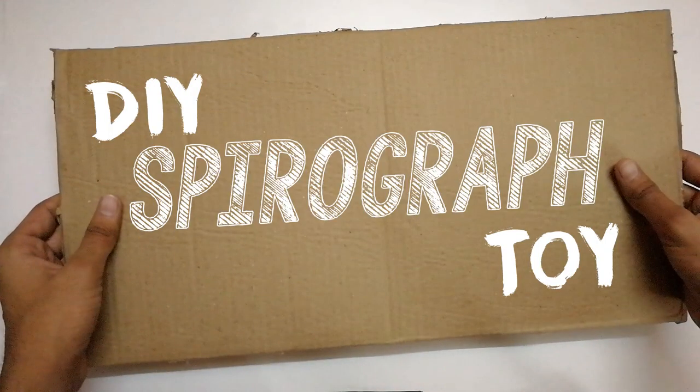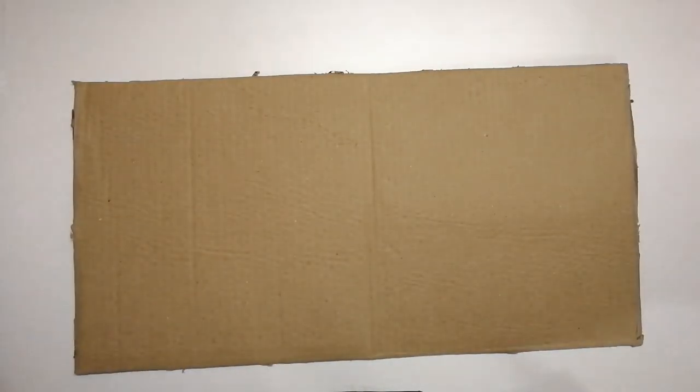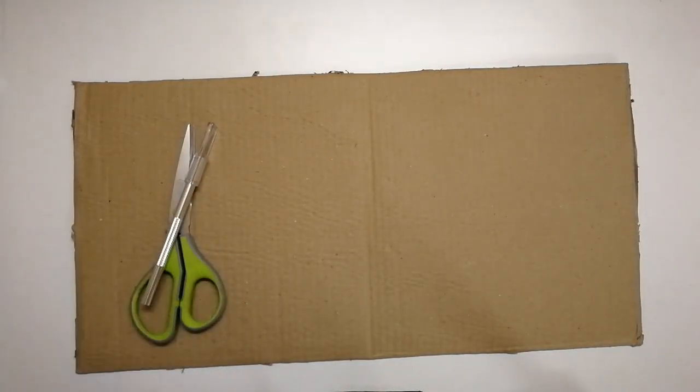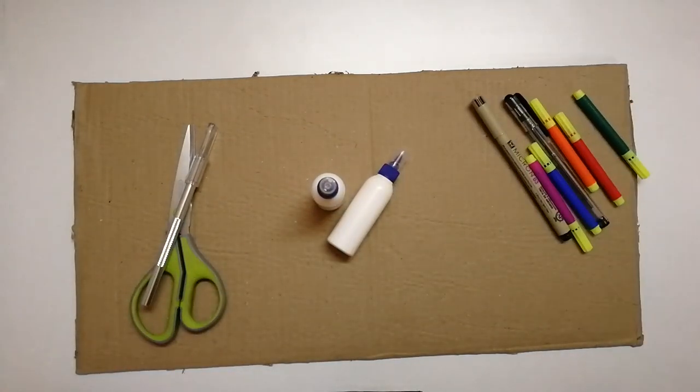Hello guys, welcome to Edictra! In this video we're going to make a spirograph toy from cardboard. For this DIY you'll need cardboard, scissors or an exacto knife, glue, and pen or sketch pins.